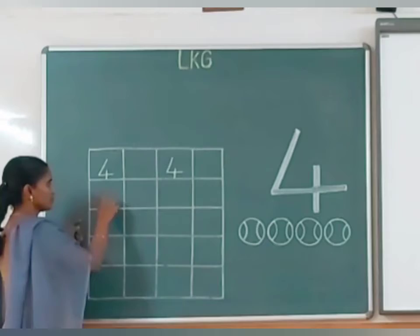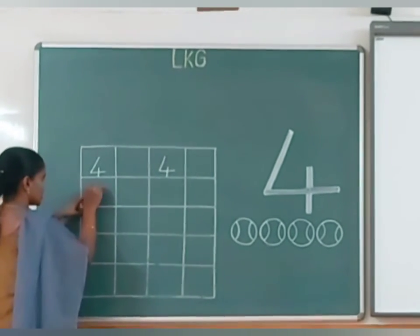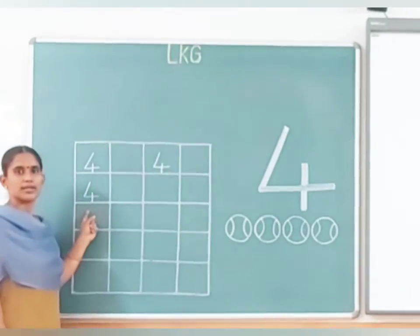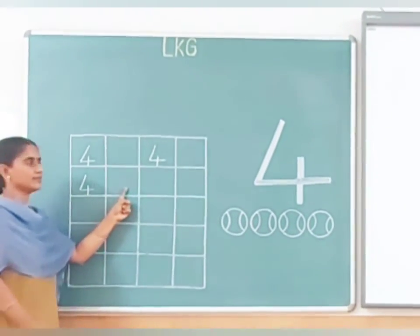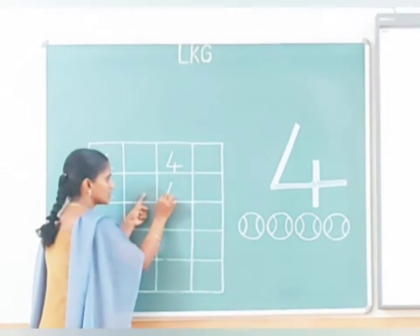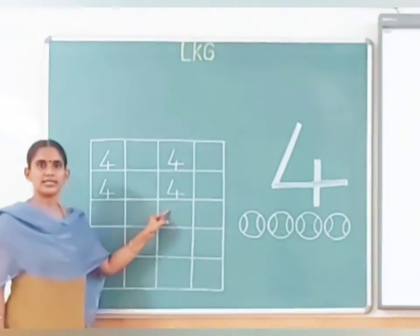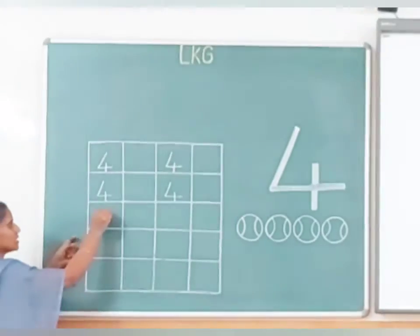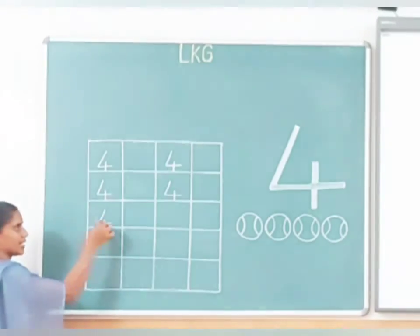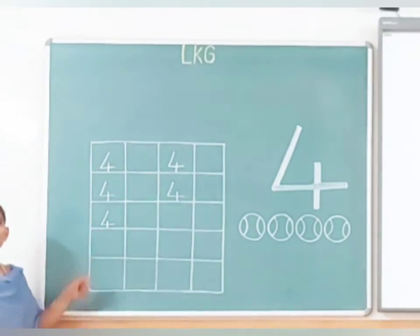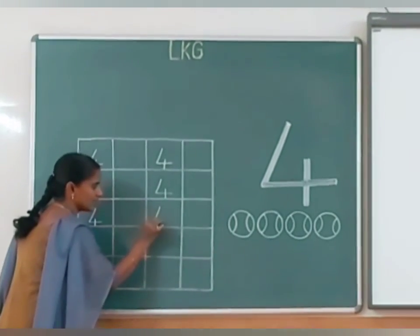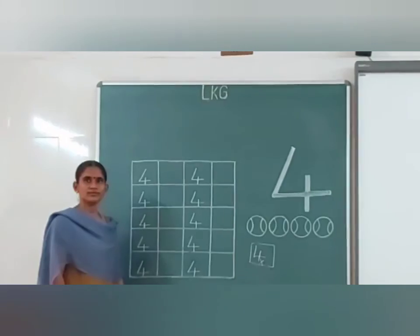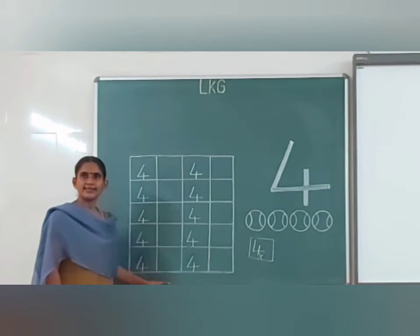Leave this box. Again — slanting line, sleeping line, standing line. What number is this? Number 4. Leave this box. Again — slanting line, sleeping line, standing line. Number 4. Again — slanting line, sleeping line, standing line. What number is this? Number 4. Leave one box and write — slanting line, sleeping line, standing line. The lines and the standing line have to touch the line. Good, keep on practicing number 4 in your notebook.